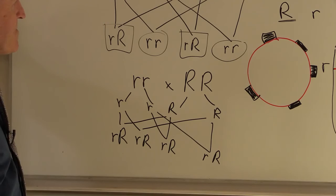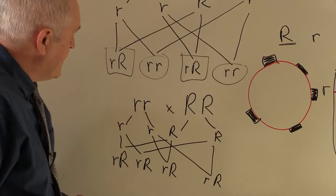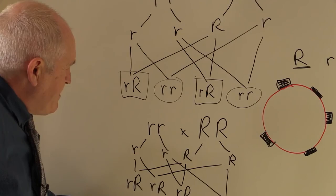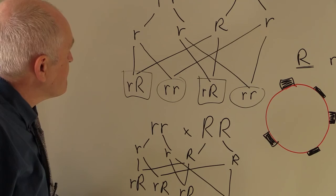So the Rhesus factor, really quite simple. It's either there or it's not. It's coded for by a single dominant gene, which may be present in homozygous or heterozygous form in the father. So consider Rhesus factor incompatibility whenever we have a Rhesus negative mother and a Rhesus positive father.